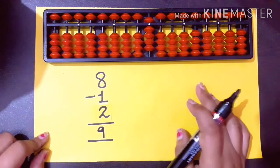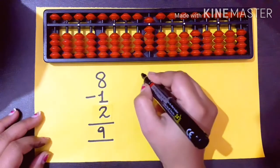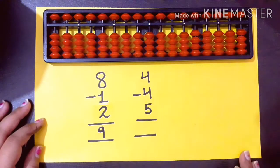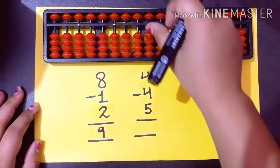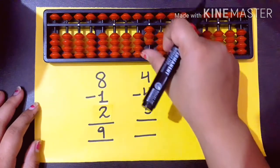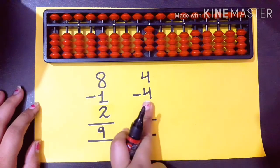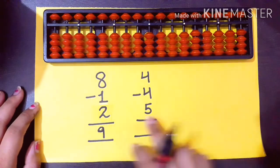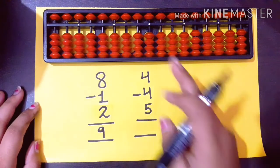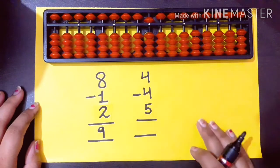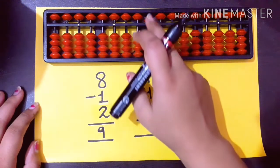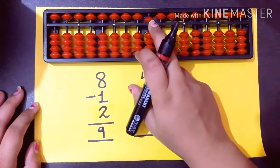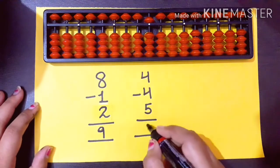Now students we will move to our next sum: 4 minus 4 plus 5. Set your abacus again. First of all you have to add 4 — 1, 2, 3, 4. Then you have to minus 4 — minus means down: 1, 2, 3, 4. Then you have to add 5. When you have to add 5, you put the upper bead down. What is your answer? 5, and no bead is there up. So your answer is 5.